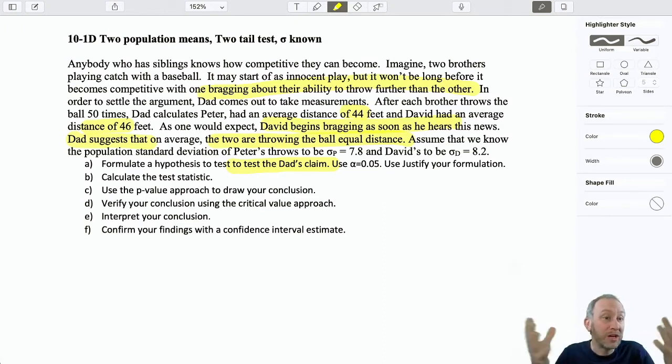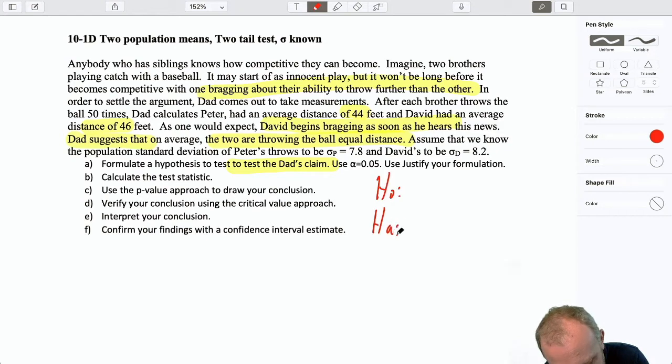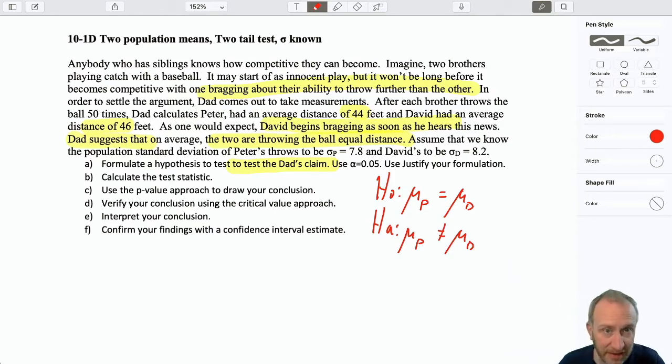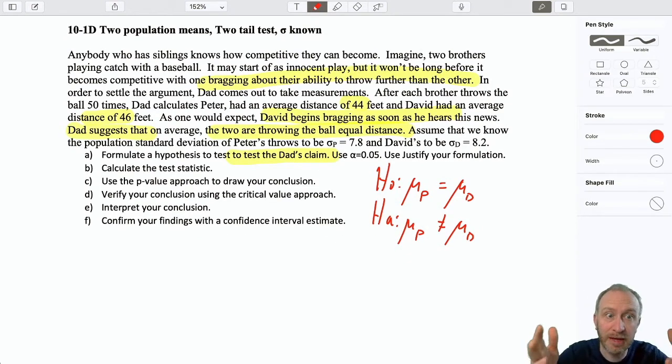So, it all really comes down to what is the problem? What are we being asked to do? We could certainly formulate this question a little bit different and say, formulate a test to justify David's bragging or something like that, right? And then it might be, okay, we want to test to see if David's bragging is justified. So, does he actually throw further than Peter? Well, maybe that could be another problem. But here it's asking us specifically to test the dad's claim. And the dad's claim is quite simply that the average distance that Peter is throwing the ball is the same as the average distance as David. So, we have a two-tailed test. The null hypothesis supports the dad's claim. The alternative hypothesis says, no, dad, you're wrong. There is a difference in the average throwing distance. So, now we've got that. The rest is, at this point, I hope, very familiar.